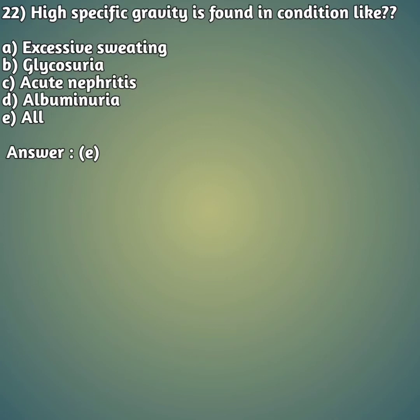Question 22: High specific gravity is found in conditions like — option A: excessive sweating, option B: glycosuria, option C: acute nephritis, option D: albuminuria, option E: all. The right answer is option E, all — high specific gravity is found in all these conditions.